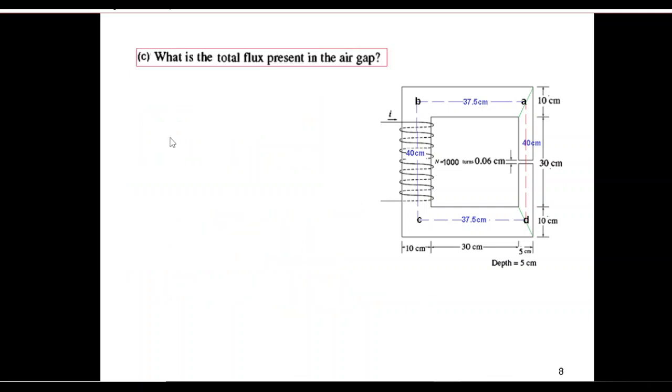And finally, what is the total flux present in the air gap? This also we had calculated. For the air gap, the same flux is all around. Therefore this is the answer. I hope you have been able to follow this. Please let me know through your comments. Thank you.